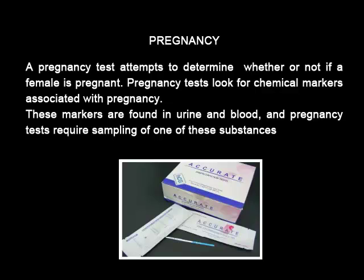A pregnancy test attempts to determine whether or not a female is pregnant. Pregnancy tests look for chemical markers associated with pregnancy. These markers are found in urine and blood, and pregnancy tests require sampling one of these substances.